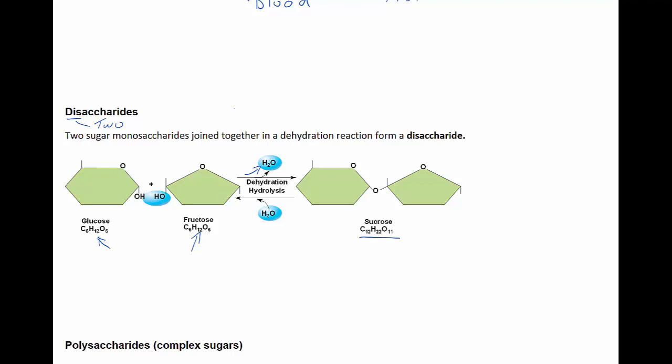In the reverse reaction, you can of course add water in the process of hydrolysis in order to break apart sucrose to form glucose and fructose. And sucrose is actually just table sugar.